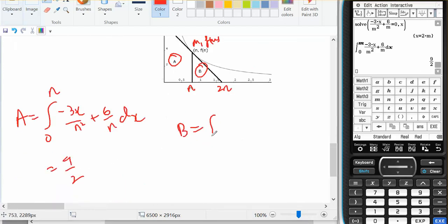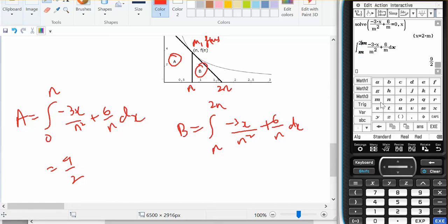And B should be the integral from n to 2n of minus 3x on n squared plus 6 on n dx. So I'm going to go from m to 2m. I'm just leaving it as m because it was already listed as m. I could change it to n. And that gives 3 on 2.